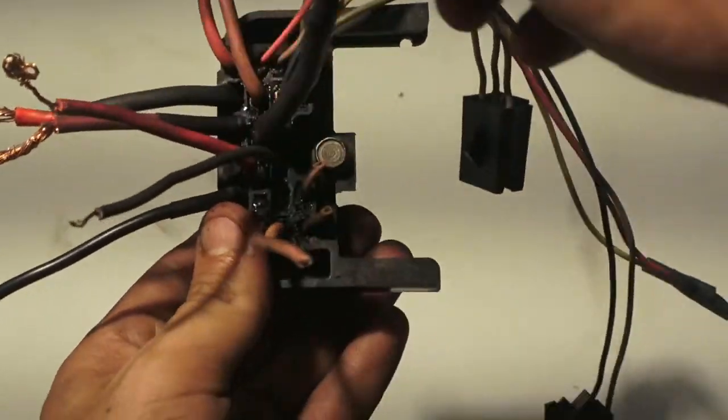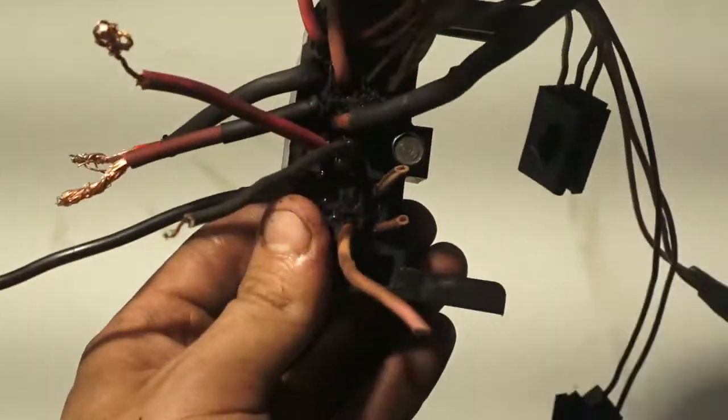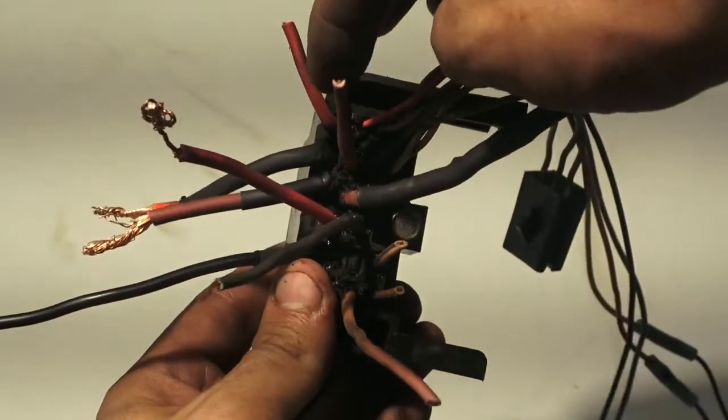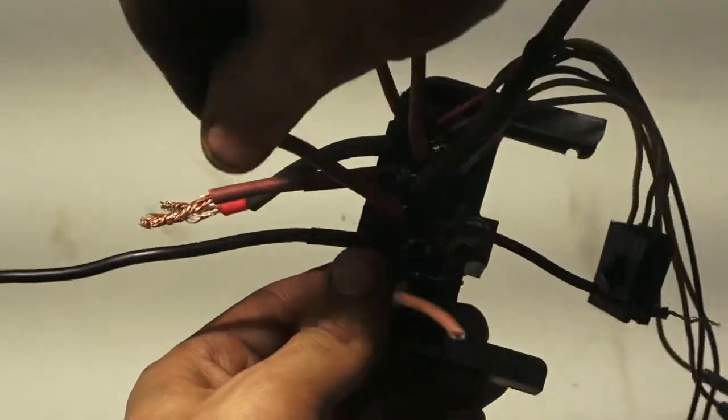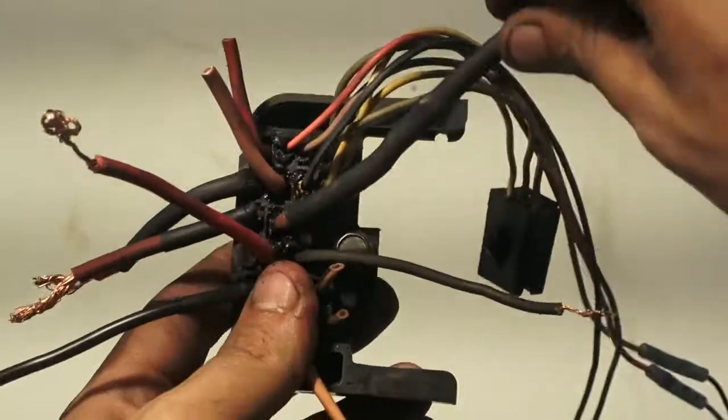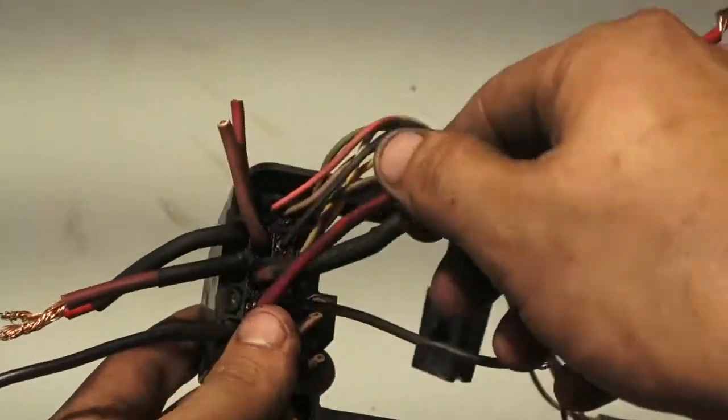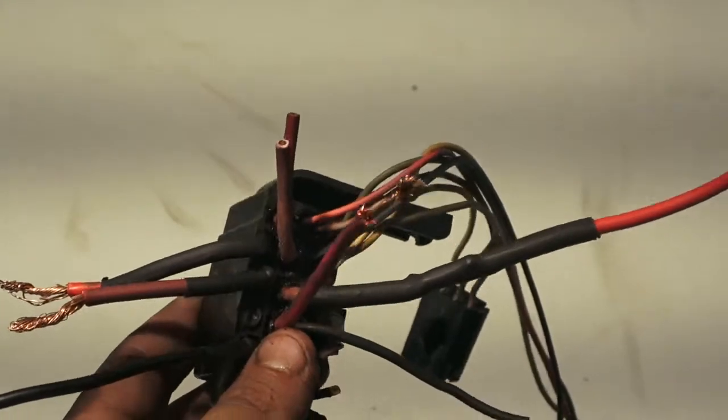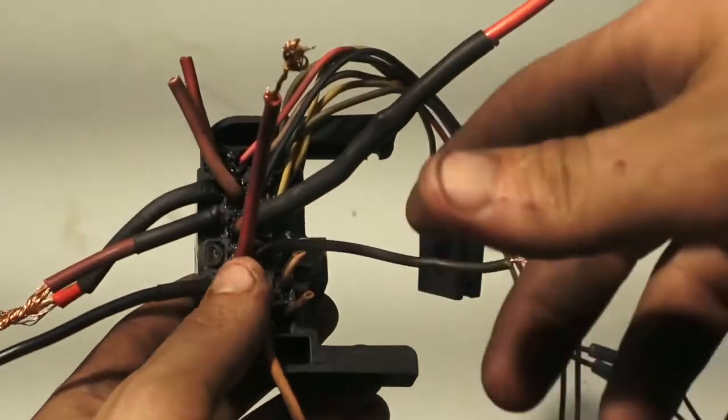So that's pretty much it. Basically you just need this wire, this wire, this one and this one. So these are your battery power, this 12 volt constant, and then starter, and then this one here is your key on power and power while cranking, if that makes sense.